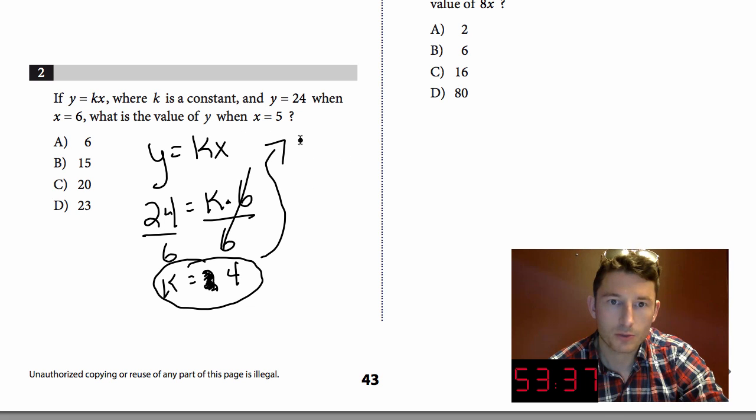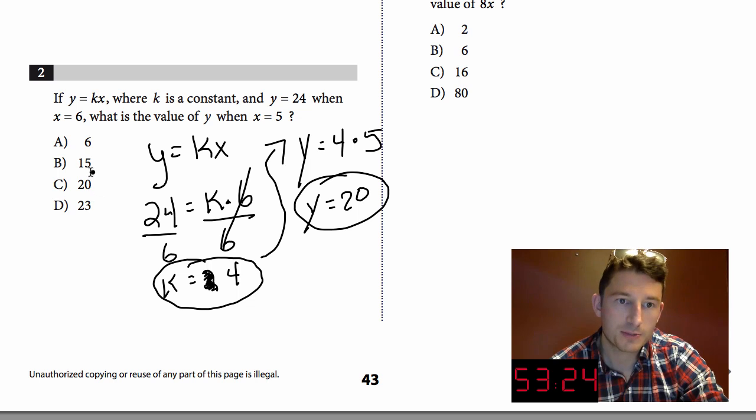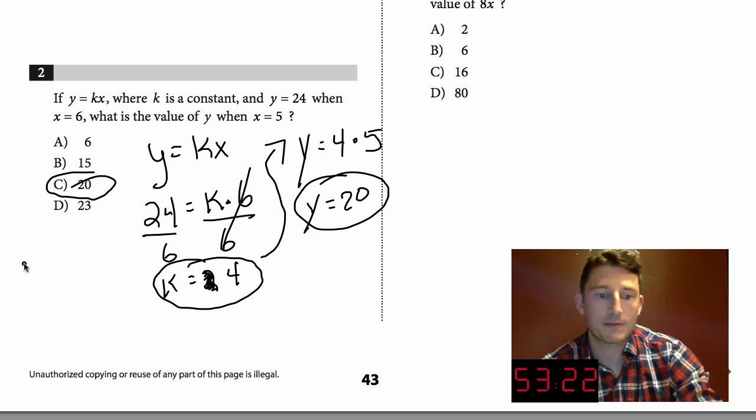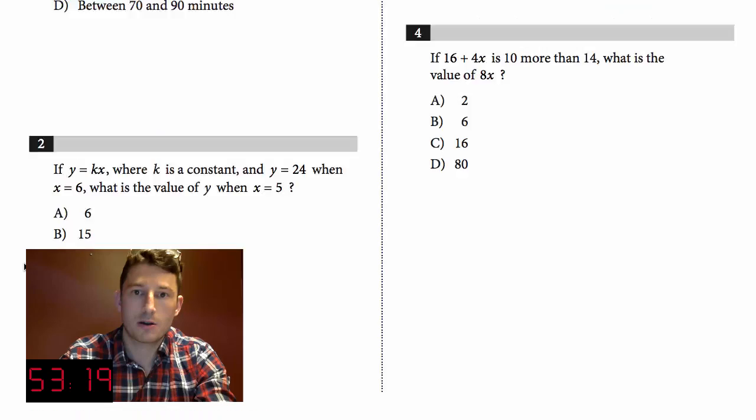They want to know what is y when x is 5. We don't know y but we know k now is 4 and we know x is going to be 5. I'm just plugging in to that original equation so y equals 20. That's it, easy peasy. Beginning of the test, we got to save time so we got to move on and move fast.